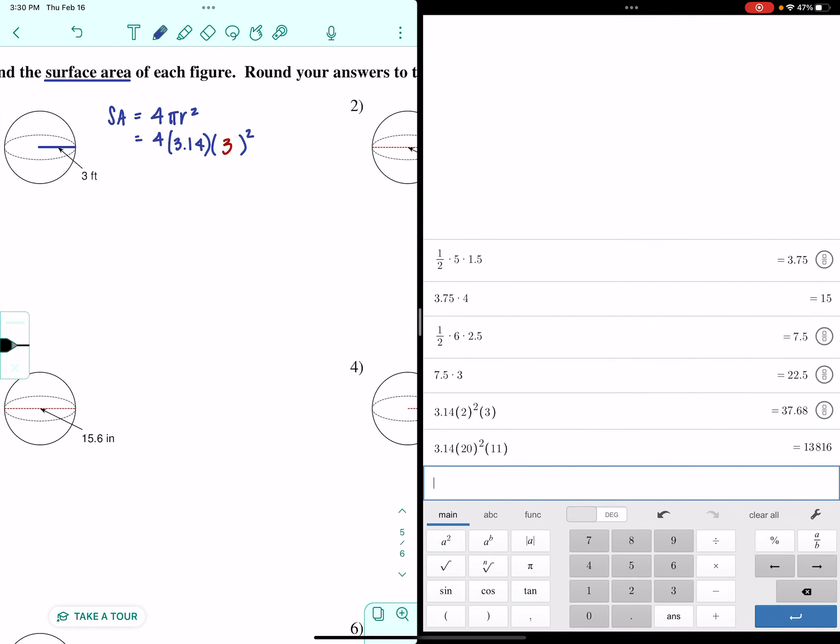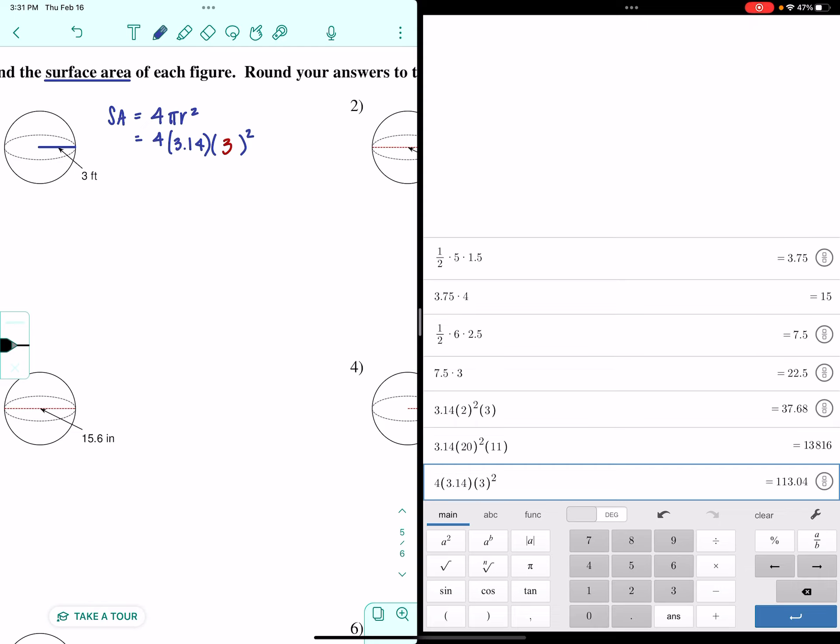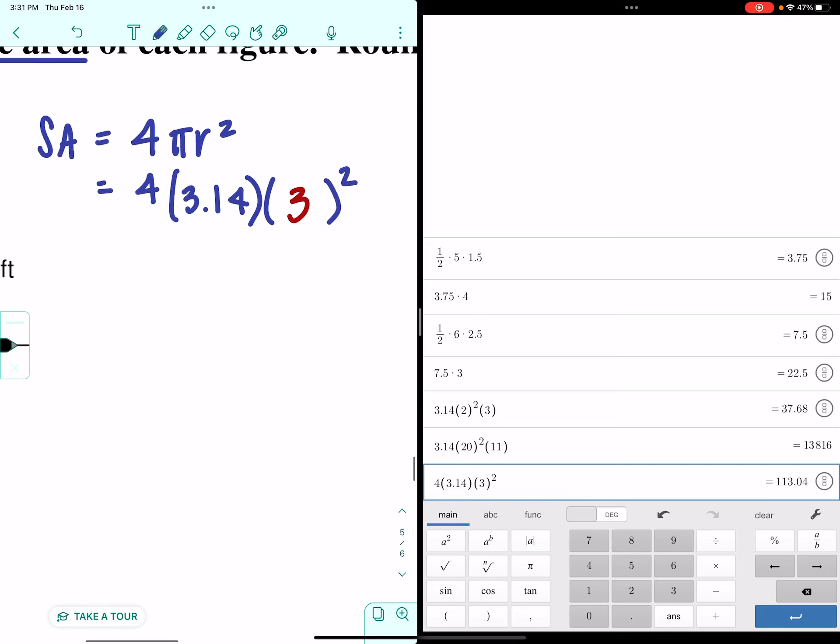I'm going to pull up Desmos. Because I love you guys, but I don't want to do that in my head. Or maybe because I love you guys, I'm not going to do that in my head. There we go. Now it works. So, I get 113.04.